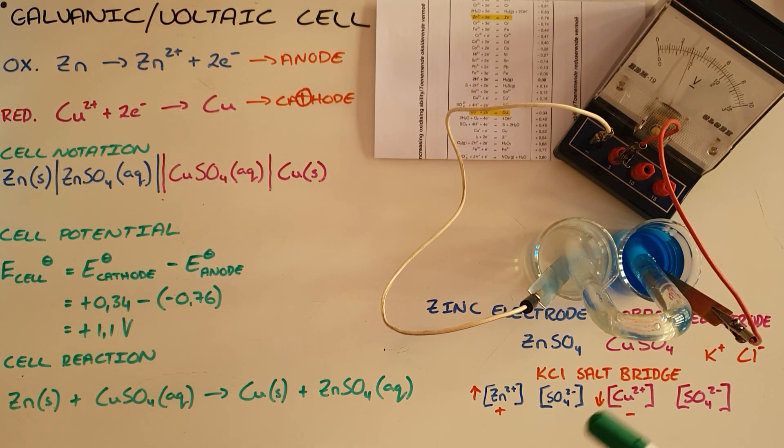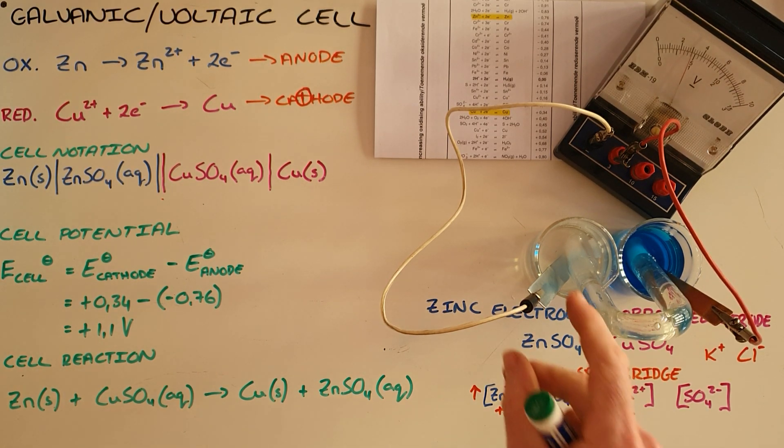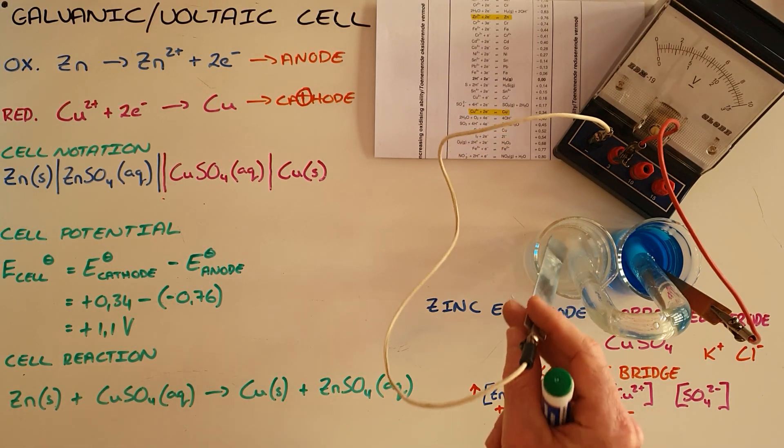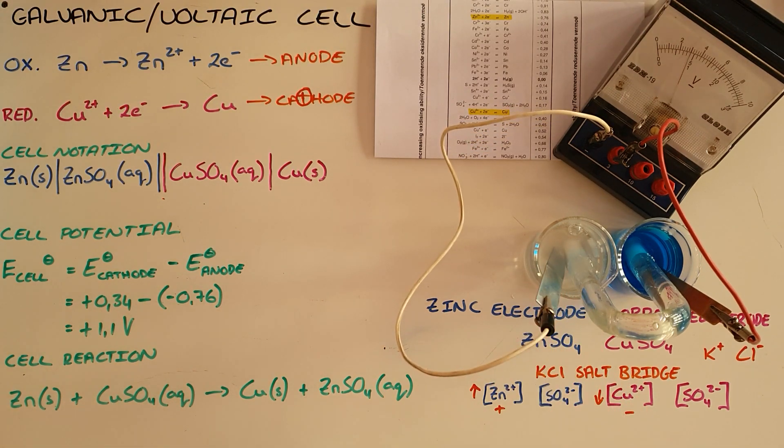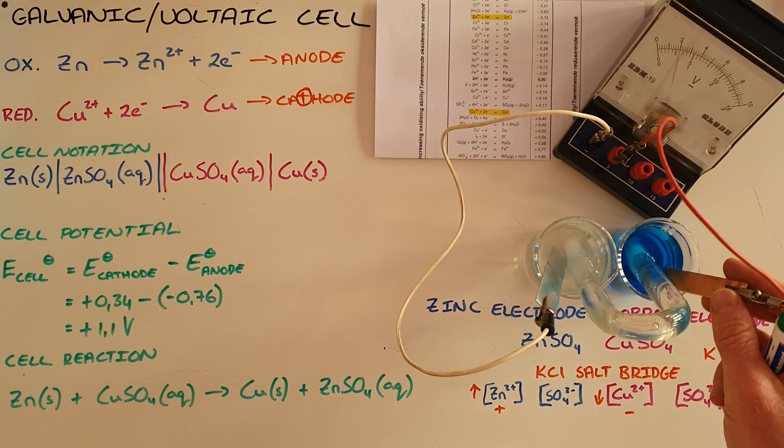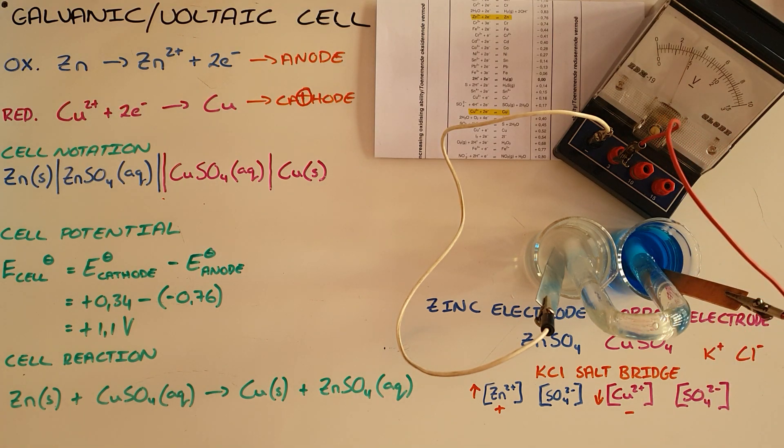If one were to leave this reaction for a long enough period of time, we would see the mass of this zinc electrode decrease as the amount of zinc decreases and becomes zinc ions. And we would also see the mass of this copper electrode increase as more copper undergoes reduction and is deposited onto that electrode.